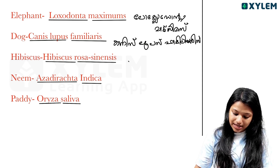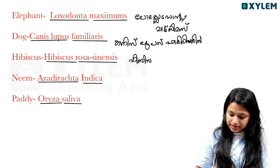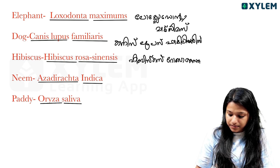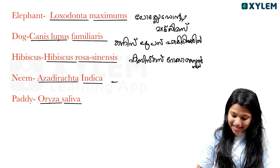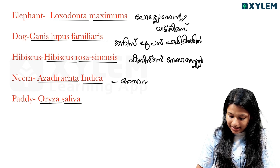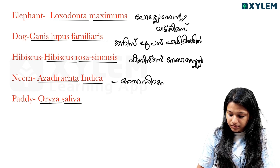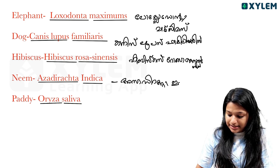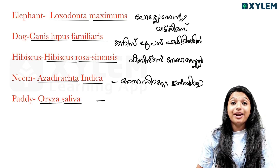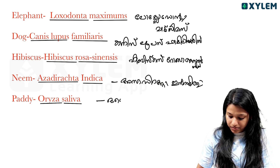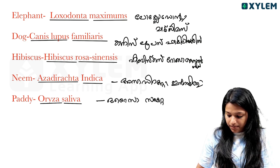Hibiscus rosa-sinensis — Hibiscus rosa-sinensis. Neem is Azadirachta indica. Paddy is Oryza sativa — Oryza sativa.